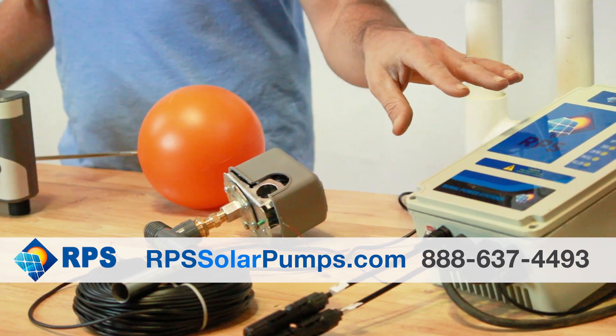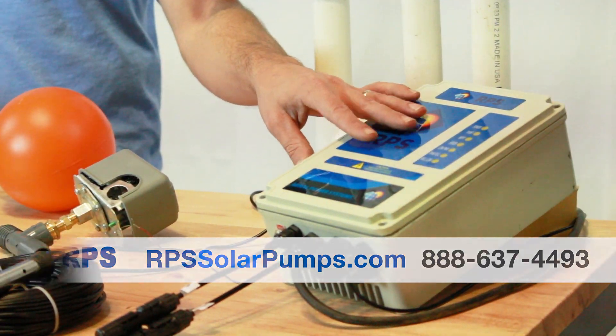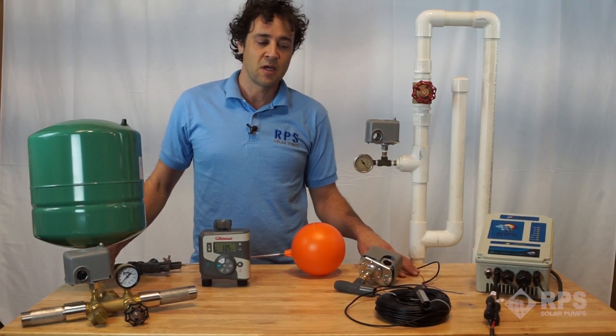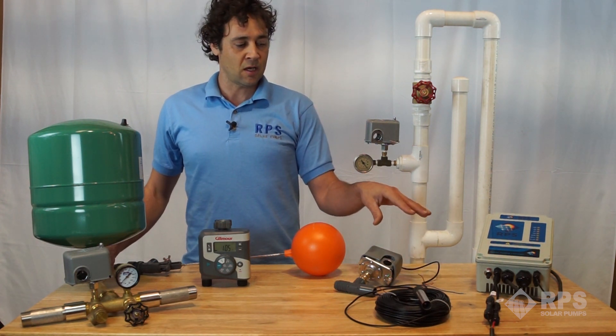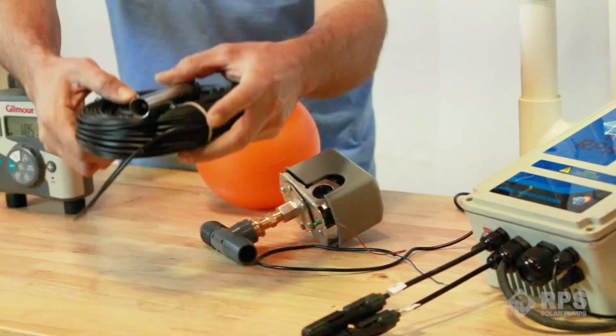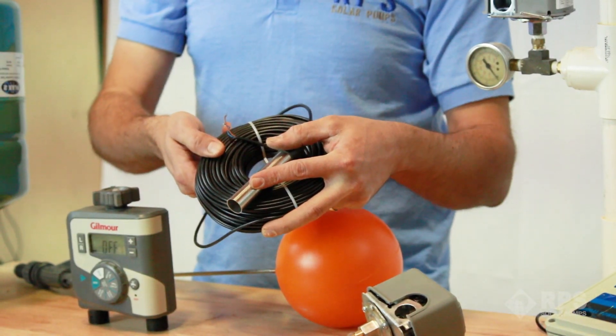These are very useful devices for integrating into your RPS solar pumps. They have very specific uses and we're going to talk about how we plumb them in and use them in lieu of our standard liquid level switch.